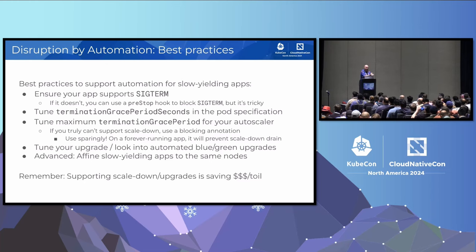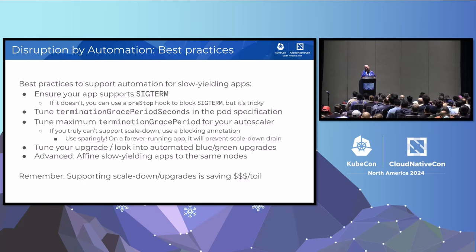Tune your upgrade timeouts, or look into automated blue-green upgrades — if you have an hour-long workload, you may need to tune that as well. In an advanced case, if you know what your cycles look like, you can also try to confine slower-yielding apps to the same nodes, so they all terminate near the same time.